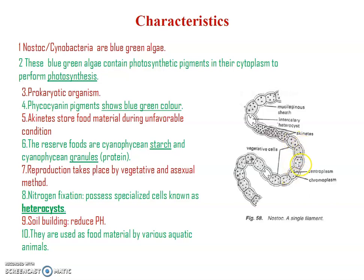Nostoc is also called blue-green algae, and the blue-green color appears due to the photosynthetic pigments present in the vegetative cells. Due to those pigments it looks blue, so it is also called blue-green algae.